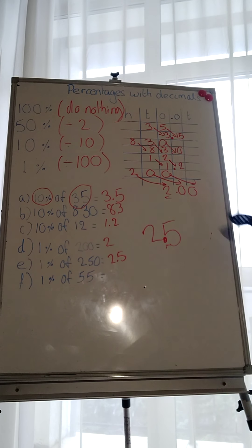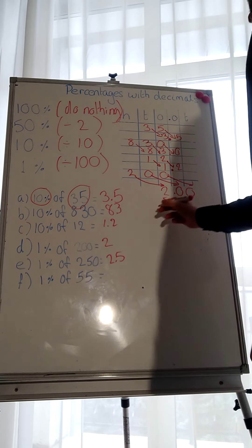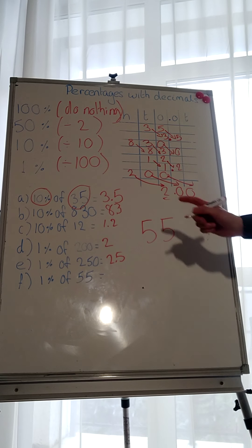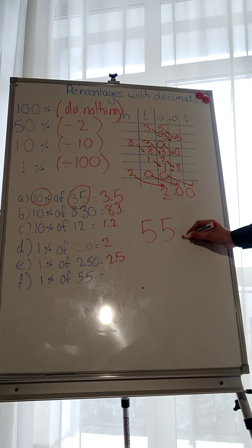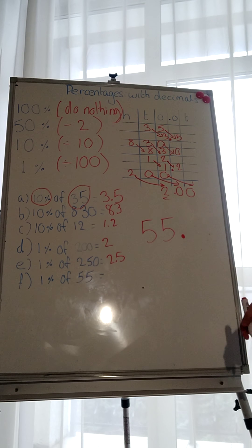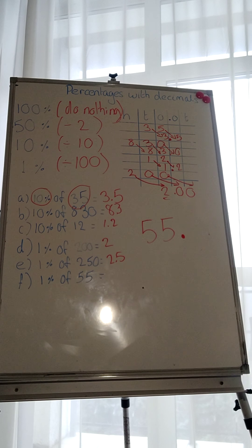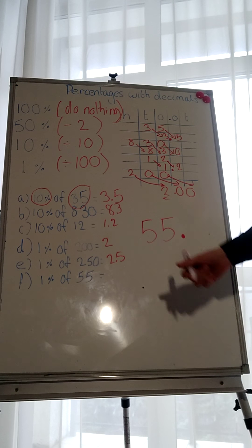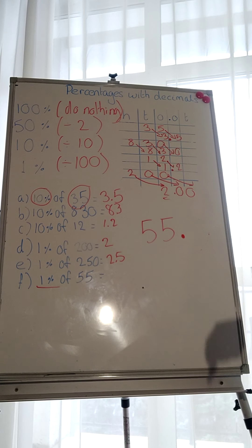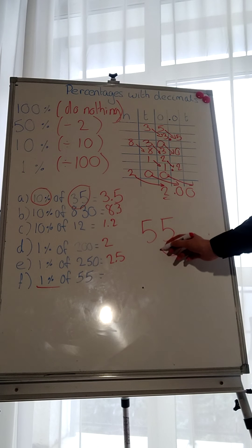The last one. Let's do it. 55. 1% of 55. We put the decimal point here. Whole number. How many points do we move it to the left? 1 or 2? Remember, move it once for 10%, twice for 1%. What do we want? We want 1% of 55. So, we're going to move it, not 1, but 2 to the left.